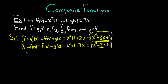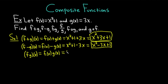Let's look at f times g. We have (f·g)(x). The definition is just the product, so it's f of x times g of x. F of x is x squared plus 1, so we have (x² + 1), and then g of x is 3x, so this is times 3x.